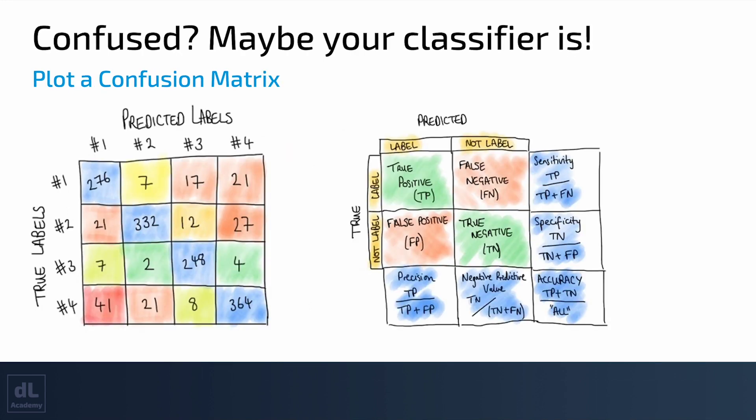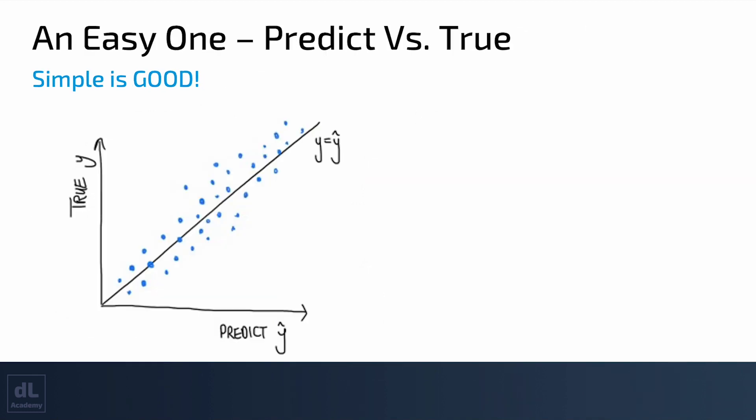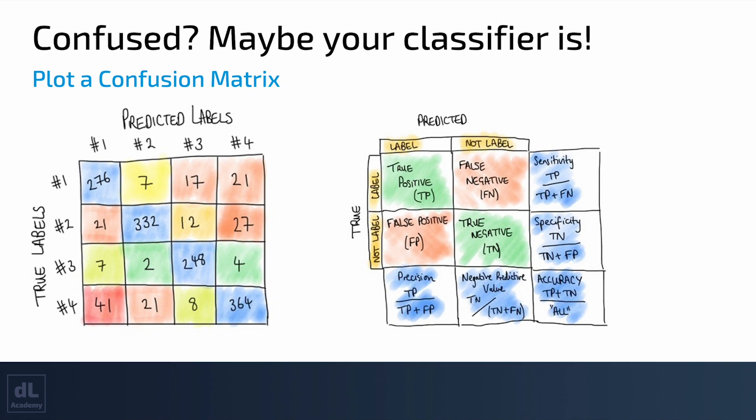The second one is called a confusion matrix. You can visualize a confusion matrix. It's basically the same as this plot, predicted versus true. But instead for a regression task, we're now looking at classification.